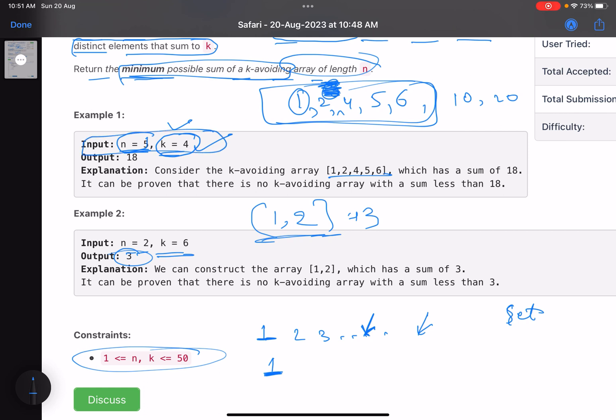First I see 1. My set is empty initially, I include 1, no worries. I'll take this example - n equals 5, k equals 4. Now the next element I should ideally insert is 2 because I need the minimum sum. Will inserting 2 violate the condition? No, because k is equals to 4 and 4 minus 2 is equals to 2. Do I have a 2 already? No, so you can include 2.